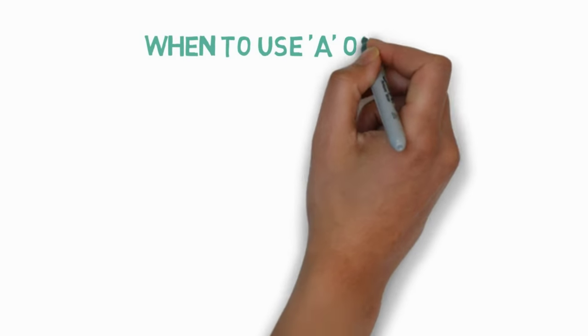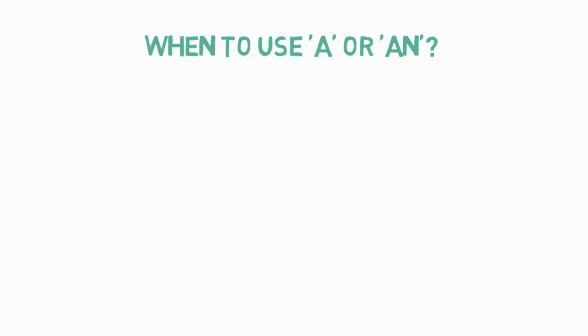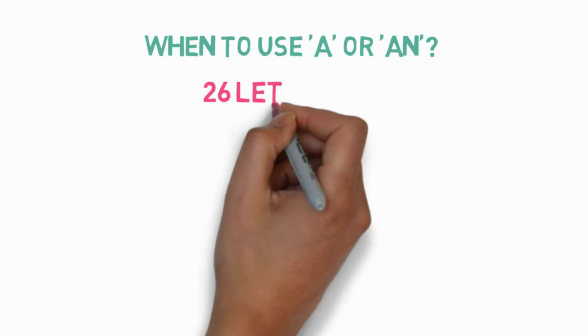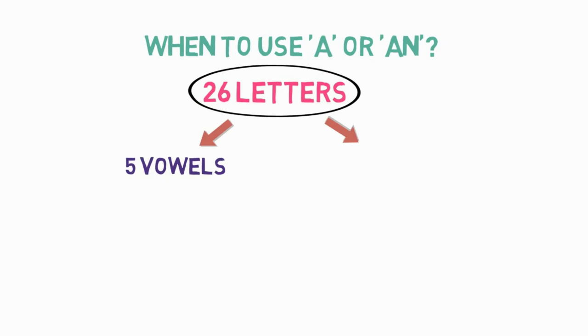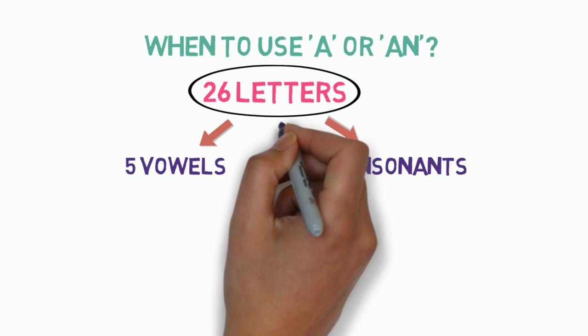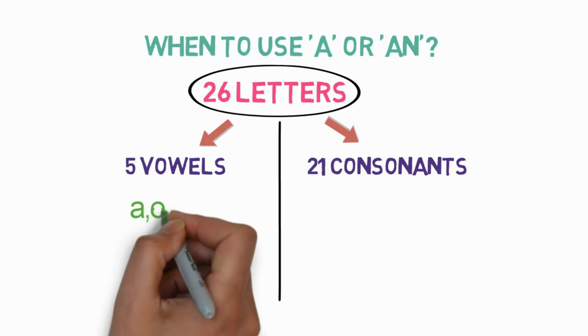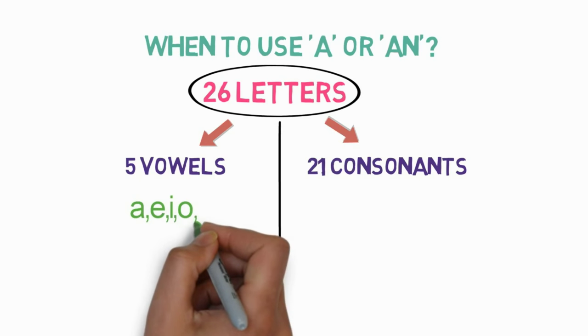So how do we decide when to use 'a' or 'an'? Basically, there are 26 letters in English, out of which 5 are vowels and 21 are consonants. The 5 vowels are A, E, I, O, U.